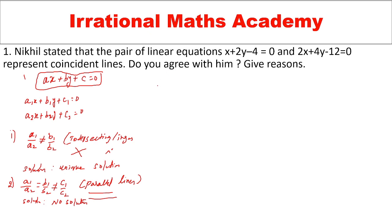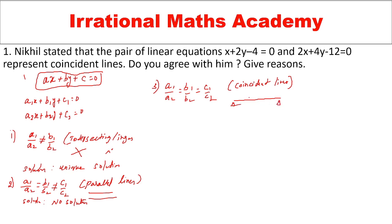Now we will talk about the third case. If a1 by a2 is equal to b1 by b2 is equal to c1 by c2, then the lines are coincident lines. One line overlaps the other, and the solution of these two lines is infinite solutions.